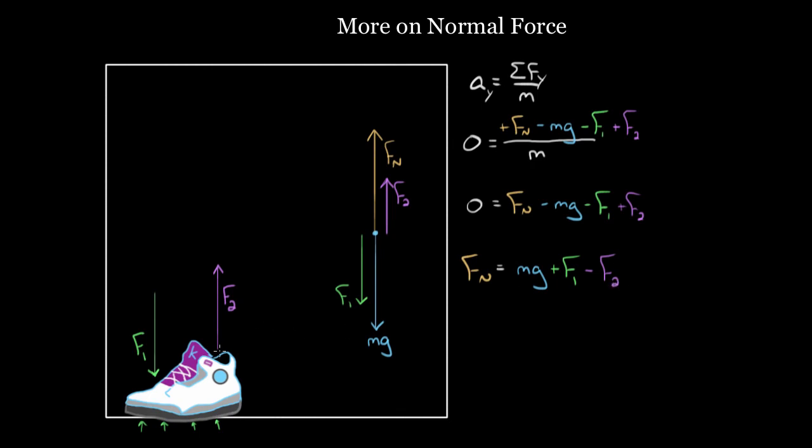This also makes sense. If you pull up on a shoe, you're relieving some of the pressure between the shoe and the other surface, the shoe and the floor. So if I pull up with 20 newtons, I'm going to reduce the normal force by 20 newtons because I'm relieving some of that pressure between the shoe and the floor.